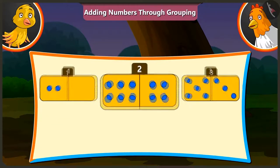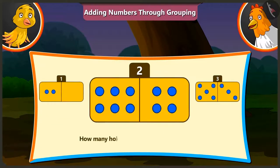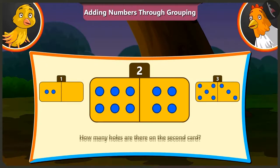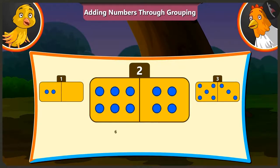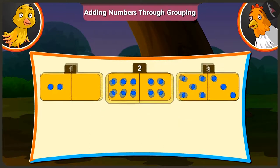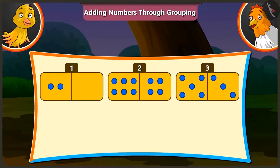Now tell me the number of holes on the second card. The second card has 6 and 4 holes. If we add 4 to 6, we get 10 holes. Wow, Peeloo!